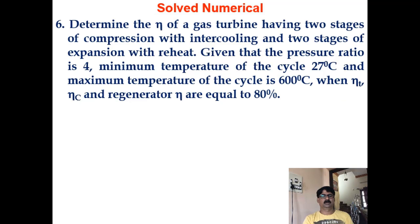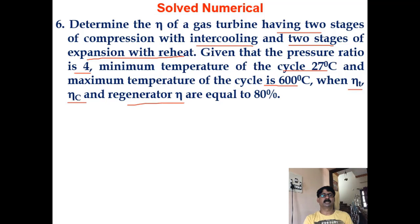Now, here is a problem for you to solve. Determine the efficiency of a gas turbine having two stages of compression with intercooling and two stages of expansion with reheat. Pressure ratio is 4, minimum temperature is 27°C, maximum temperature is 600°C. Efficiency of the turbine, compressor, and regenerator are all equal to 80% — regenerator efficiency here means effectiveness of regeneration.